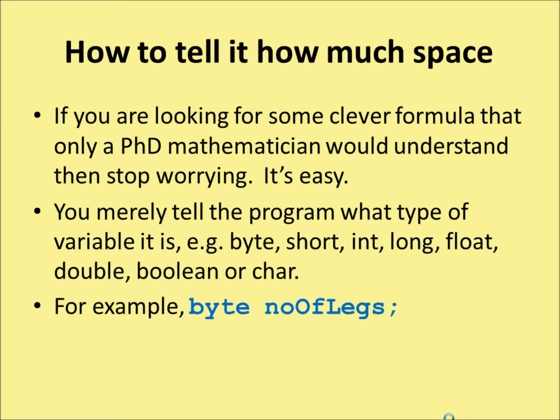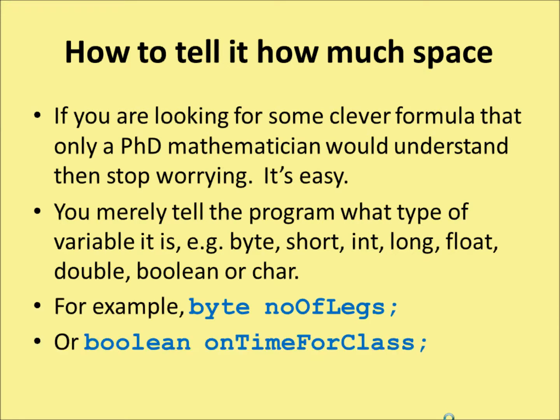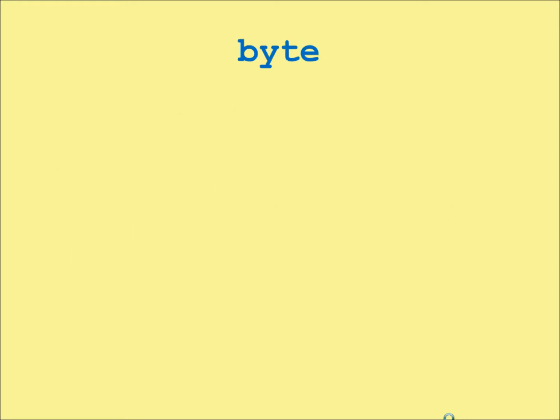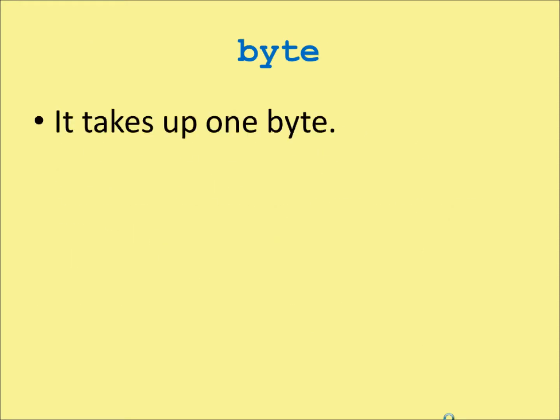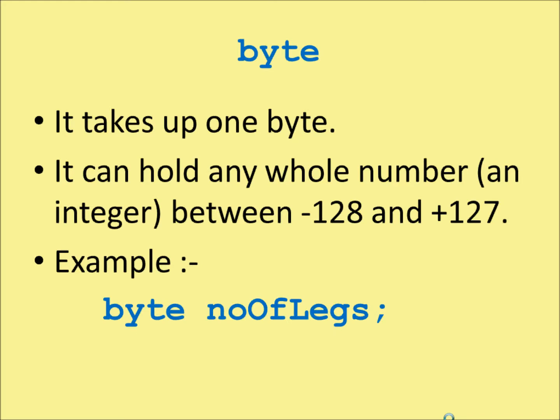For example, you might declare: byte numberOfLegs; or boolean onTimeForClass. A byte takes up one byte. It can hold any whole number — an integer — between minus 128 and plus 127. Here's how you would declare one: you would say byte, with a lowercase b, then numberOfLegs, then a semicolon.